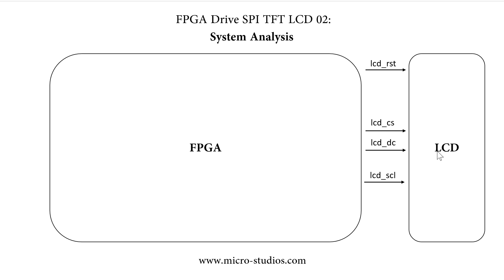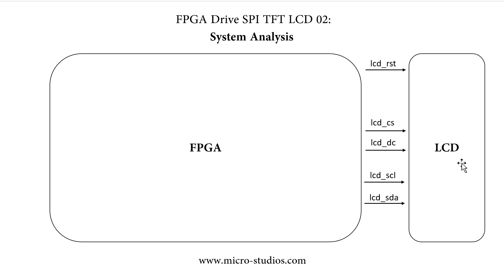The next signal will be the clock signal. We use the SPI protocol, so we need one clock signal. And the next signal will be the data signal. The FPGA sends data and commands through this signal to the LCD.